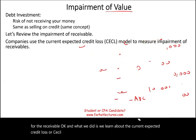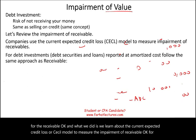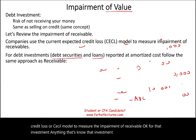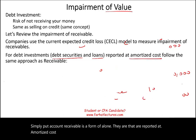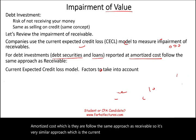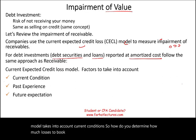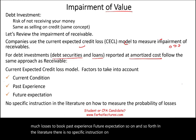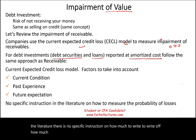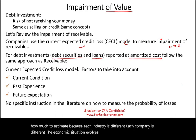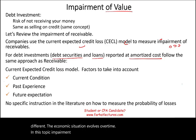We use the Current Expected Credit Loss model, or CECL model, to measure the impairment of receivables. For debt investments — securities and loans — accounts receivable is a form of a loan. Assets reported at amortized cost follow the same approach as receivables. The CECL model takes into account current conditions, past experience, and future expectations. There is no specific instruction in the literature on exactly how much to write off, because each industry and company is different and the economic situation evolves over time.